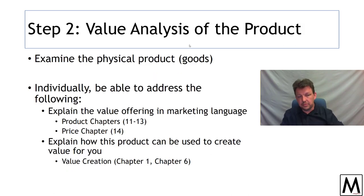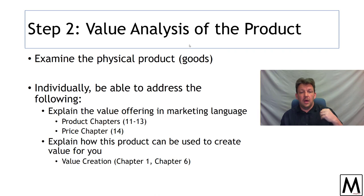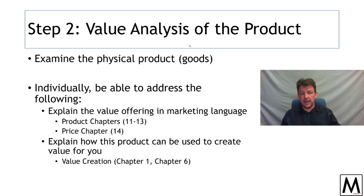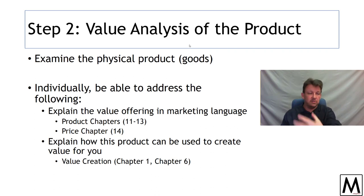Step two: each member of your team needs to engage with the use of the physical good, and individually come back to the group and say: this is the value offering this product provided to me. You want to be able to do so in a marketer's language — the product chapters, the price chapters, consumer behavior, value creation. How did this object create value for you in its consumption? If you're doing this solo, you're reporting back to yourself. If you're in a team, you're reporting back to the rest of your team, explaining the value you got out of using the product.